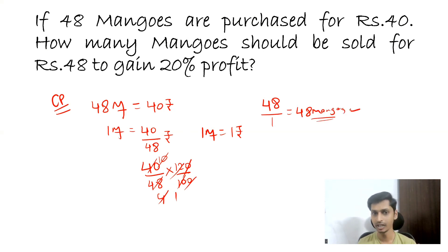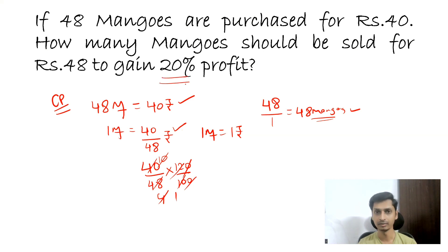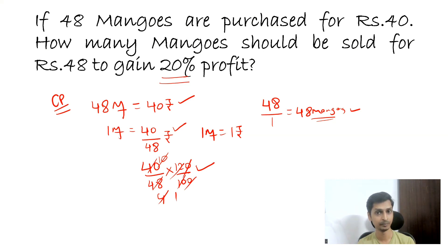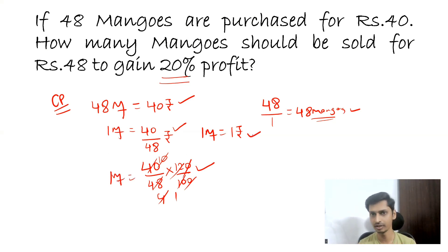Hope you are clear. Let me explain it one more time. You purchased 48 mangoes for rupees 40, which means cost price of one mango is 40 by 48 rupees, and we know this is 100 percent. You want to get a 20 percent profit, so you want to sell one mango for 40 by 48 into 120 by 100 rupees, which means you want to sell each mango for 120 percent. Then the selling price of one mango is one rupee.